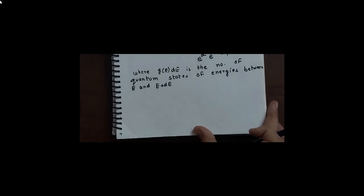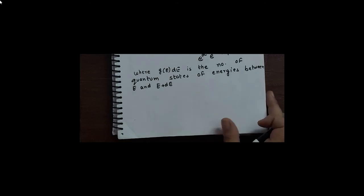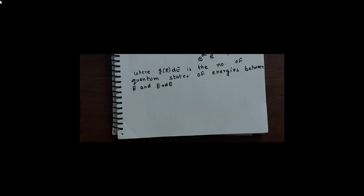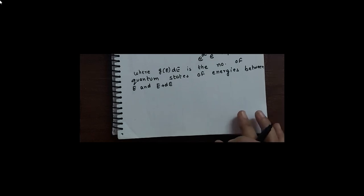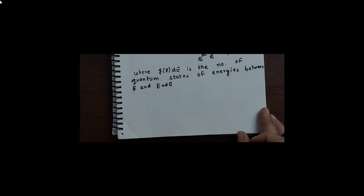We will consider a black body chamber of temperature T and volume V, and fill it with radiation. Radiation means photons, and photons follow Bose-Einstein statistics.